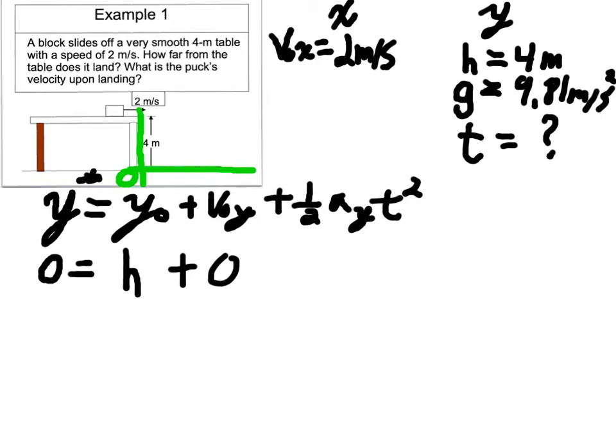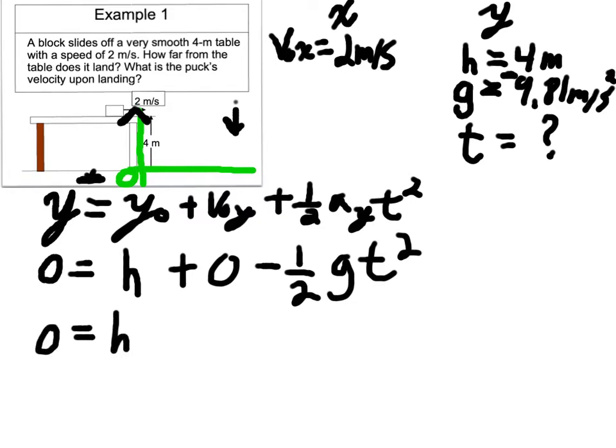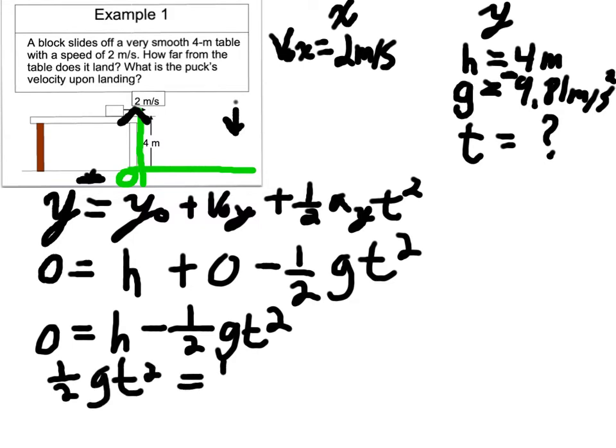So if my origin is down here on the ground, that makes positive y pointing up. And since gravity points downward, this will need to be a negative. So let's go ahead and just put the negative in the equation. Minus one half g t squared. Now we'll solve for time. 0 equals height minus one half g t squared. And if I move the one half g t squared to the other side of the equation, I get one half g t squared equals h. Okay. I keep going.